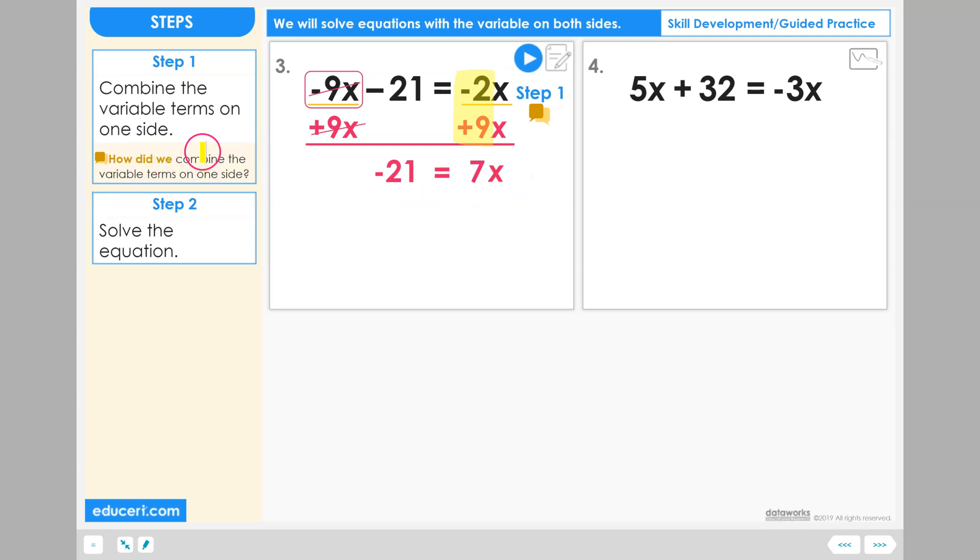How did we combine the variable terms on one side? For problem number 3, we combine the variable terms onto one side, in this case onto the right side, because the right side already has only a variable term, so it made more sense to get rid of the variable term from the left side, leaving the numeric term on the left side.